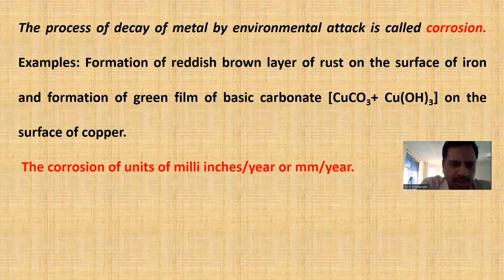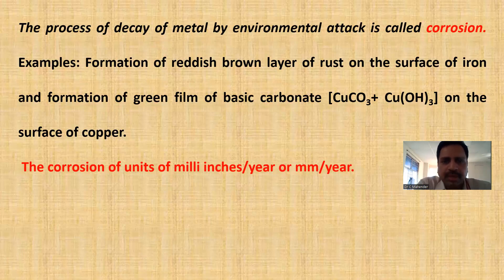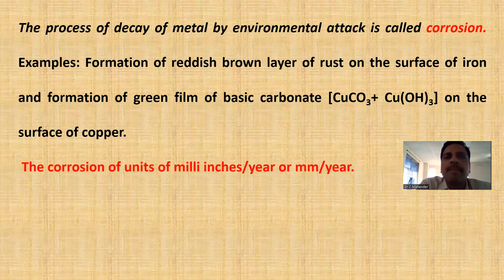What are the units of corrosion? The units of corrosion are inches per year or mm per year. It means how many inches or how many mm of metal have been destroyed per year. This is how the measurement of corrosion is expressed.